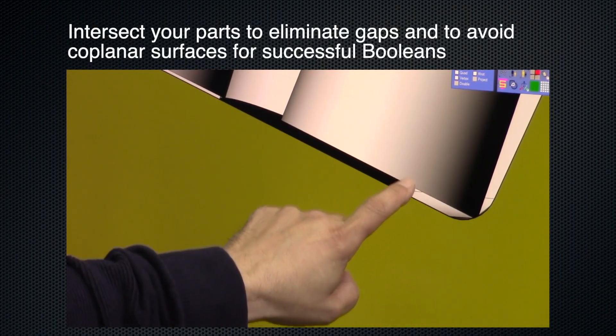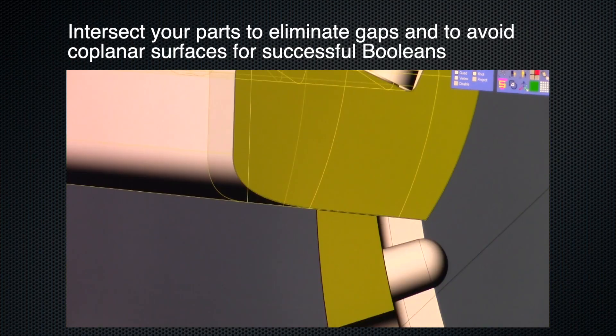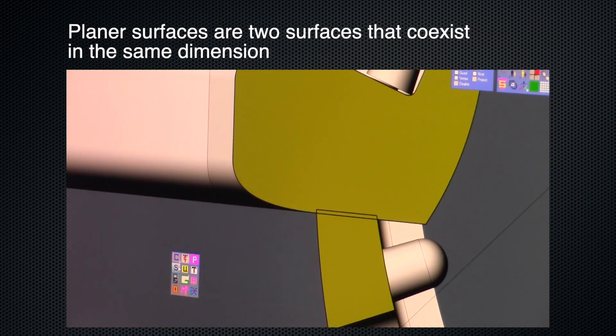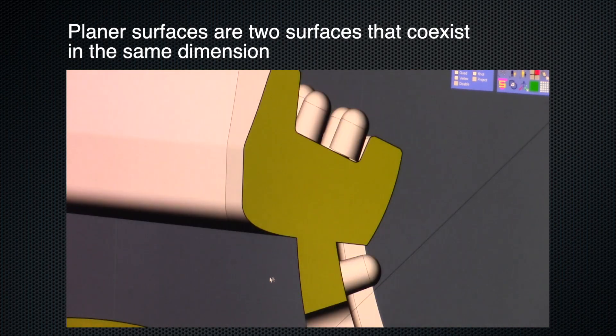In summary, we covered intersecting your parts to eliminate gaps and to avoid coplanar surfaces so you will have successful booleans and better parts. Thanks for watching. Please look for other videos in this series and learn how to perfect your trade.